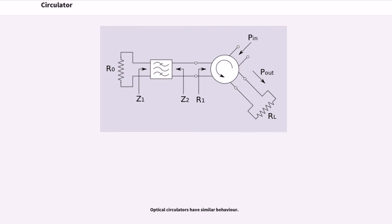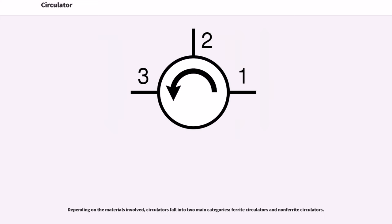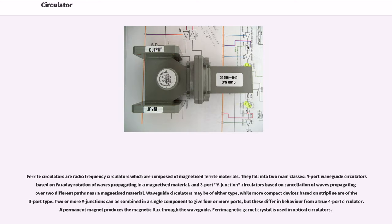Optical circulators have similar behavior. Depending on the materials involved, circulators fall into two main categories: ferrite circulators and non-ferrite circulators. Ferrite circulators are radio frequency circulators which are composed of magnetized ferrite materials. They fall into two main classes.